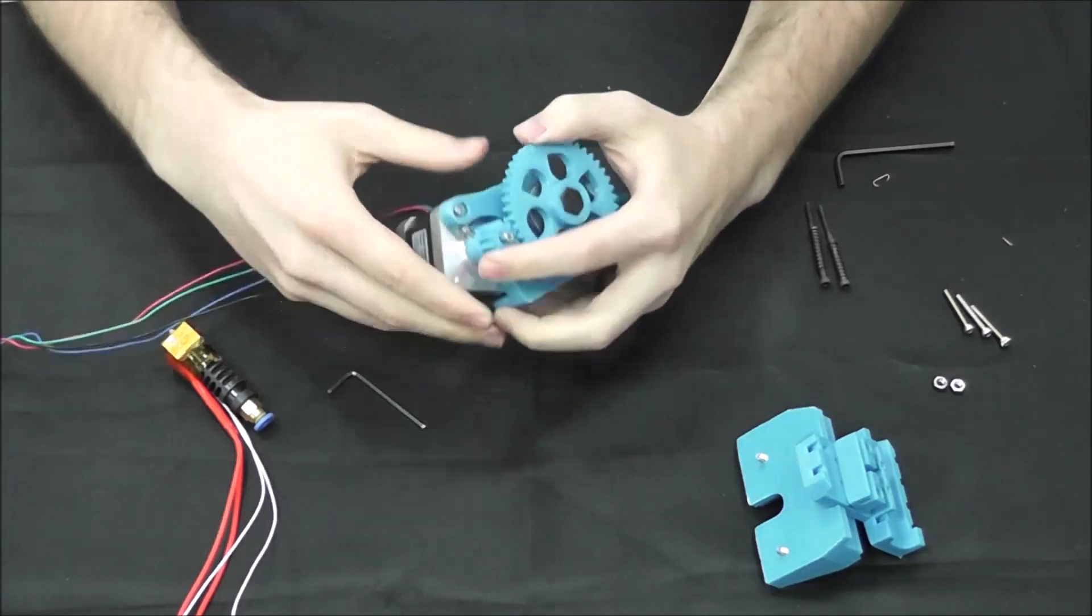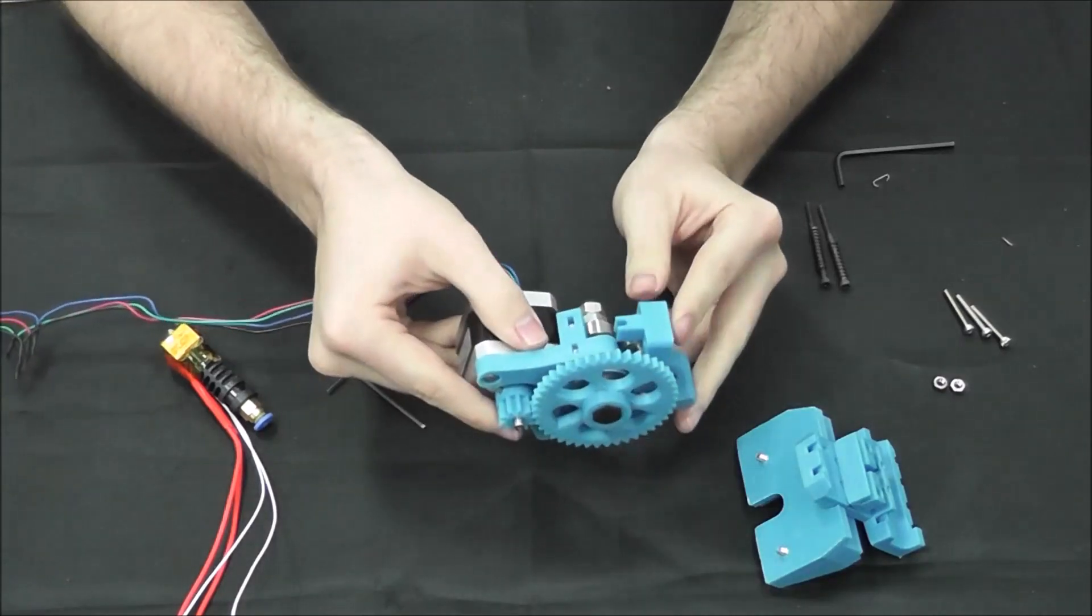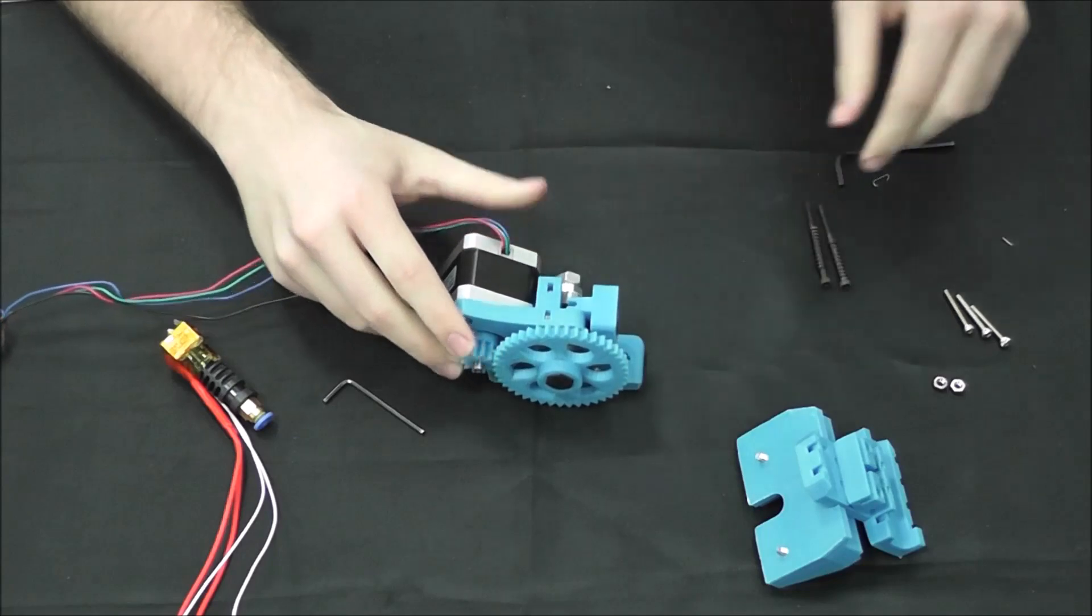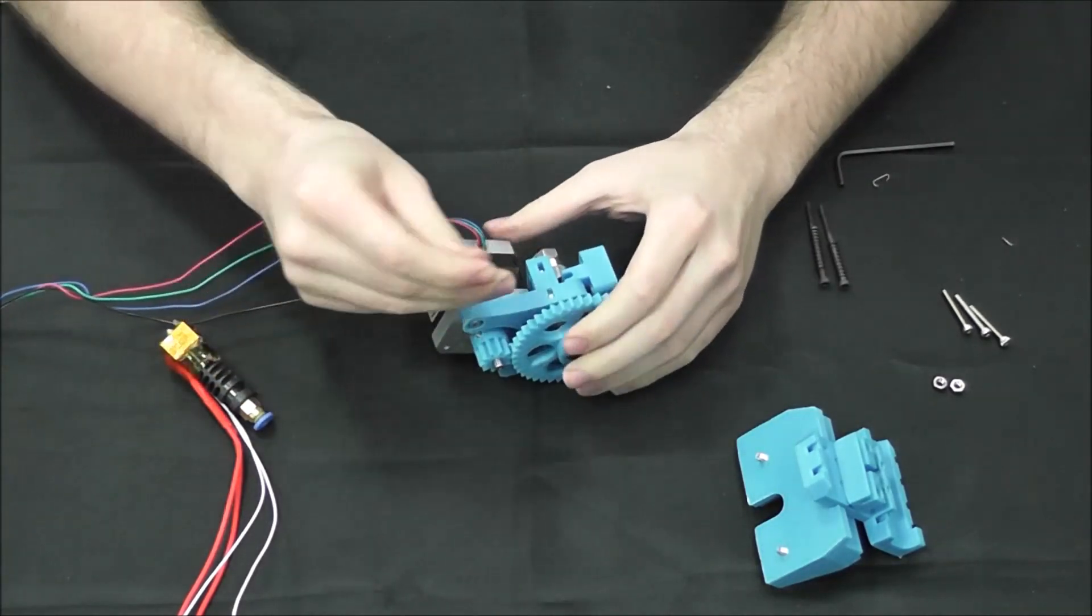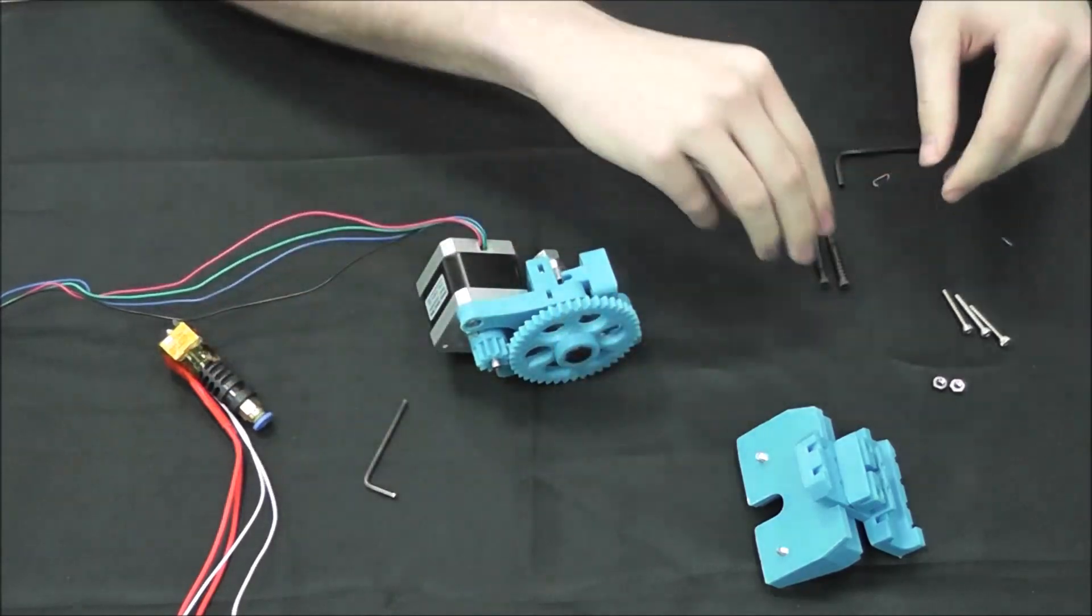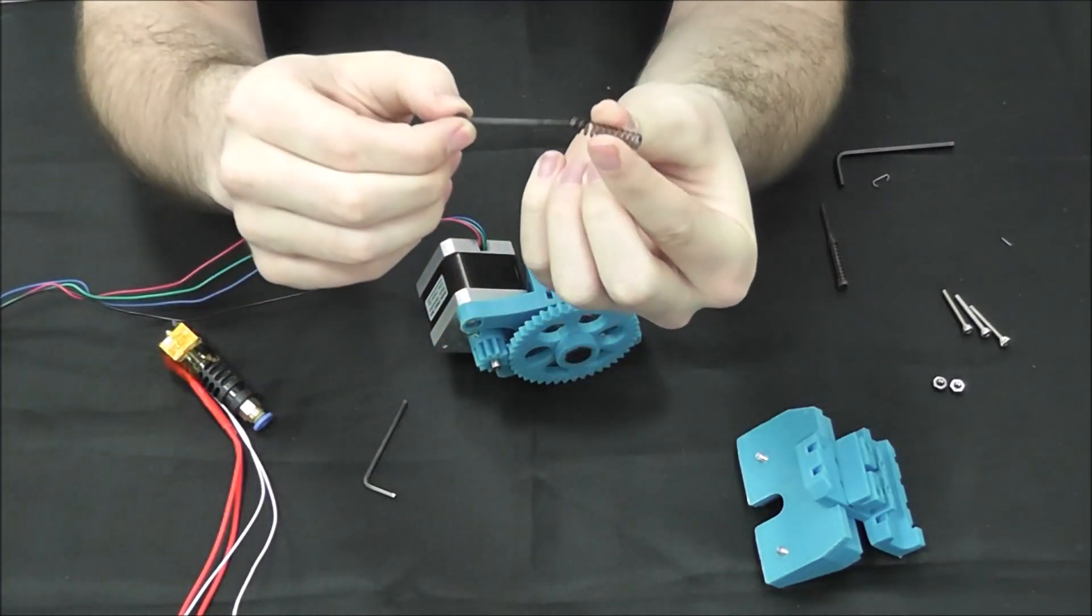Okay, now that generally takes care of most of that. Next, we're going to assemble the extruder springs over the M3 50 millimeters. As you can see here, they just slide right over.